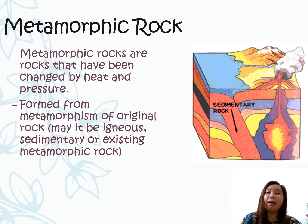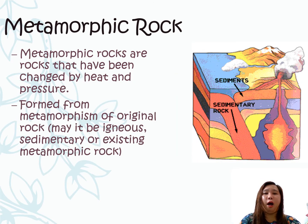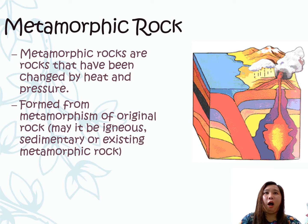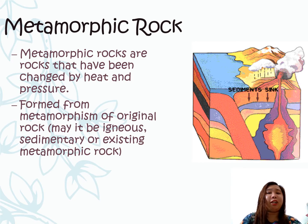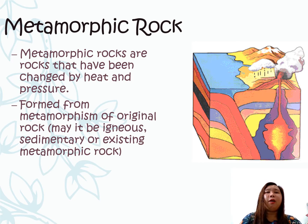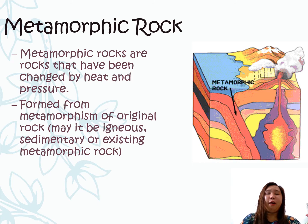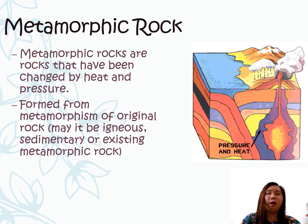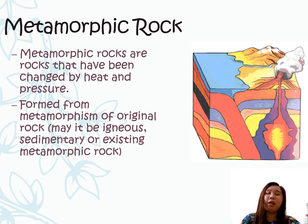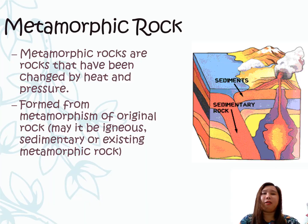The last type of rock is the metamorphic rocks. These types of rocks are those rocks that have been changed by heat and pressure. These rocks are formed from the metamorphism of the original rock, may it be igneous, sedimentary, or existing metamorphic rock.